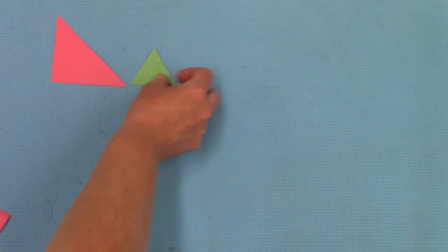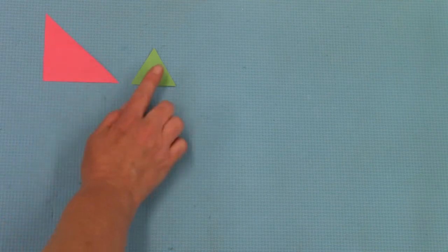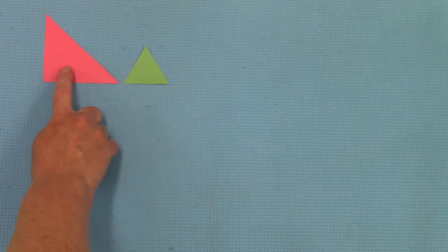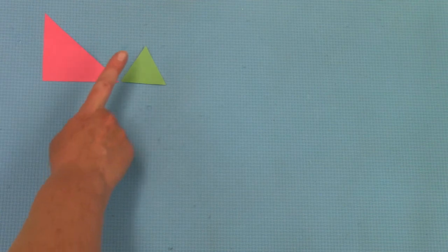So I have a large red triangle. I'm gonna put a small green triangle. Large, small. Red, green. They're different in two ways and they're alike in one way. They're triangles.